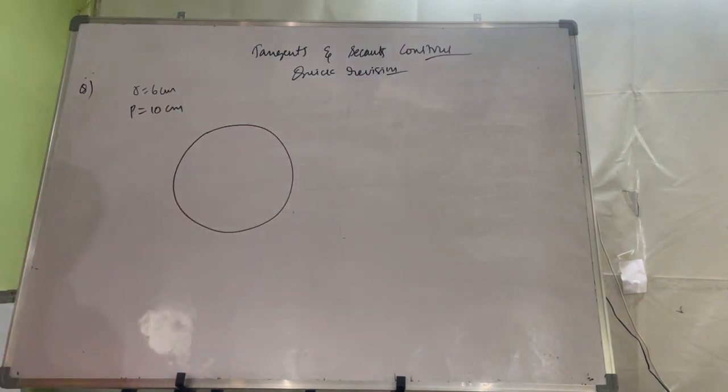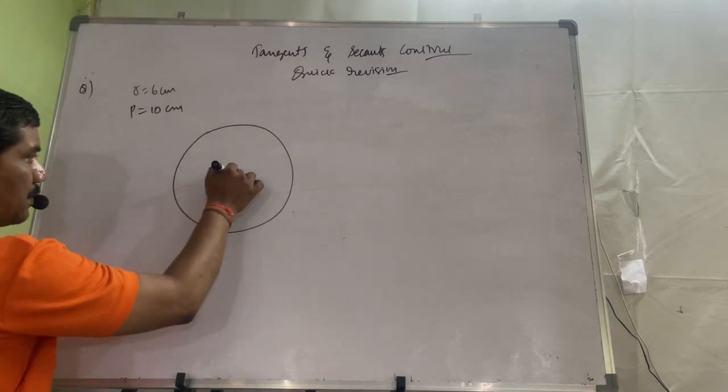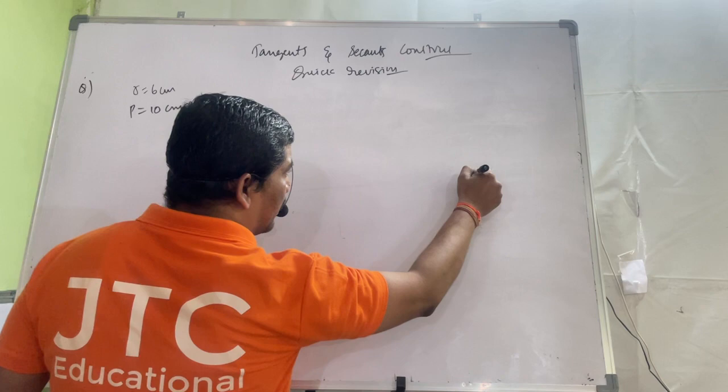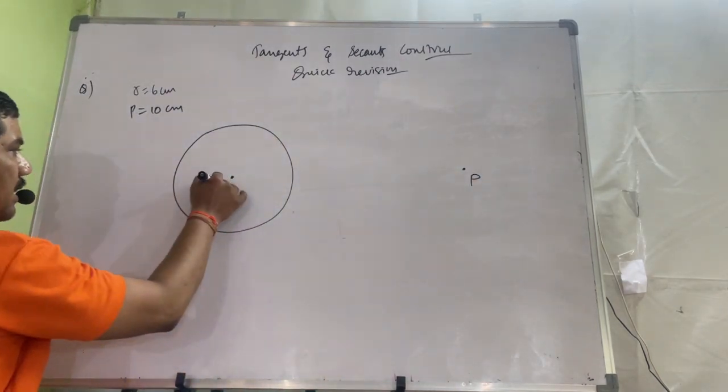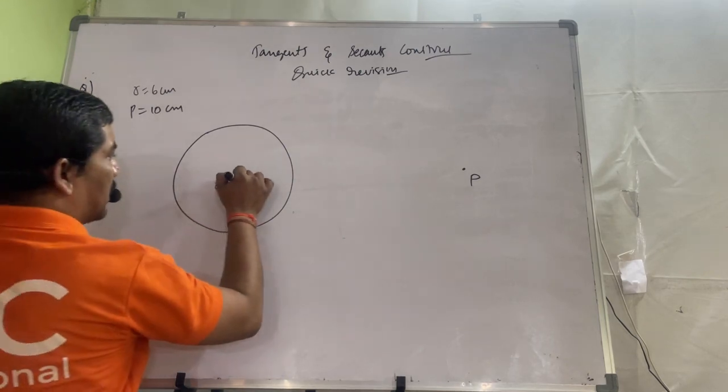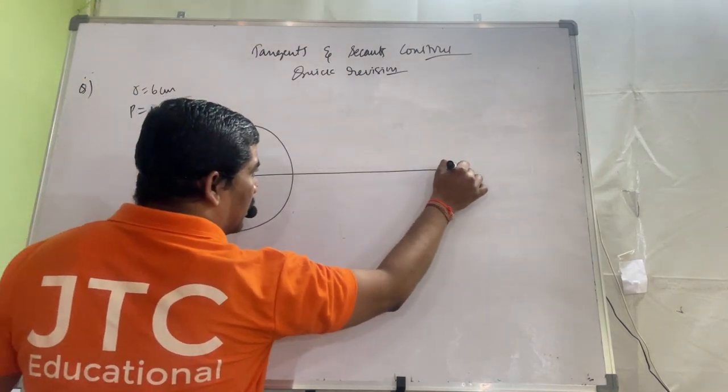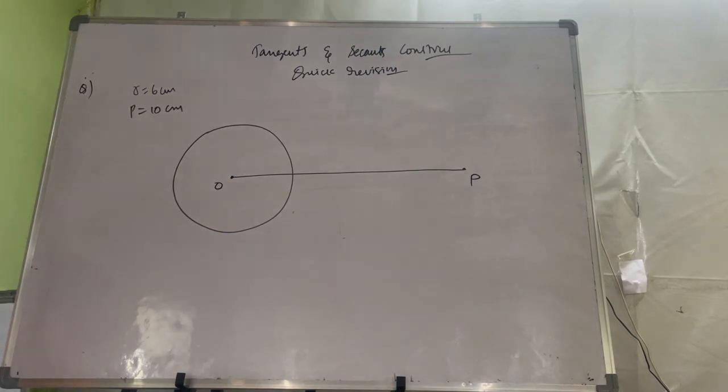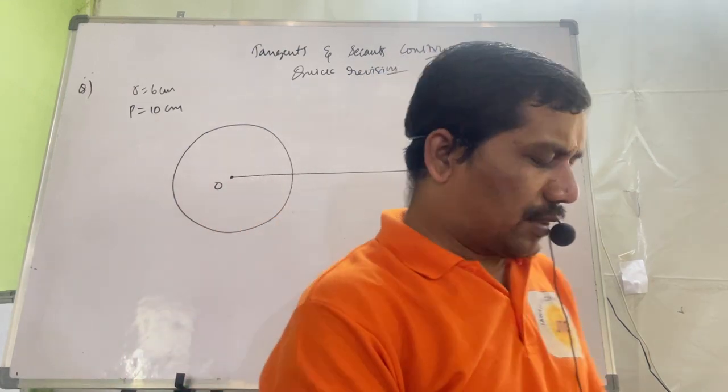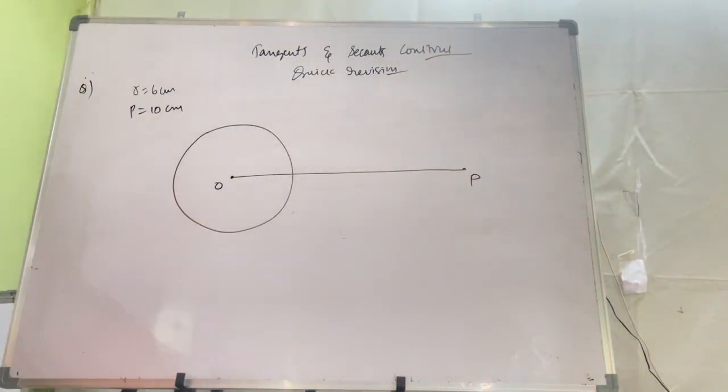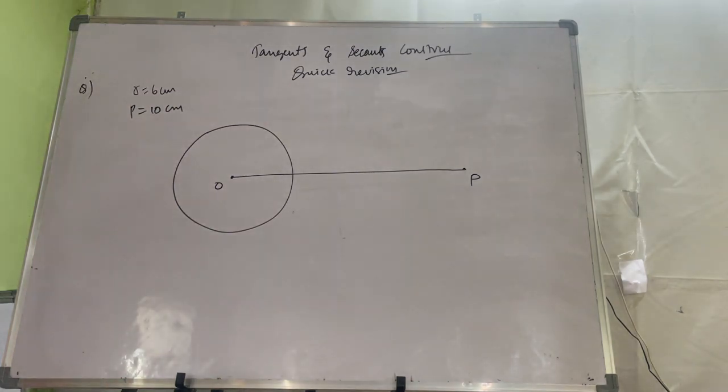So first what you should do, 6 cm circle you have to draw. Then from its center, you take one point P. Center you name it as O. This distance should be how much? 10 cm, as much given in the paper question. Second step clear everyone.